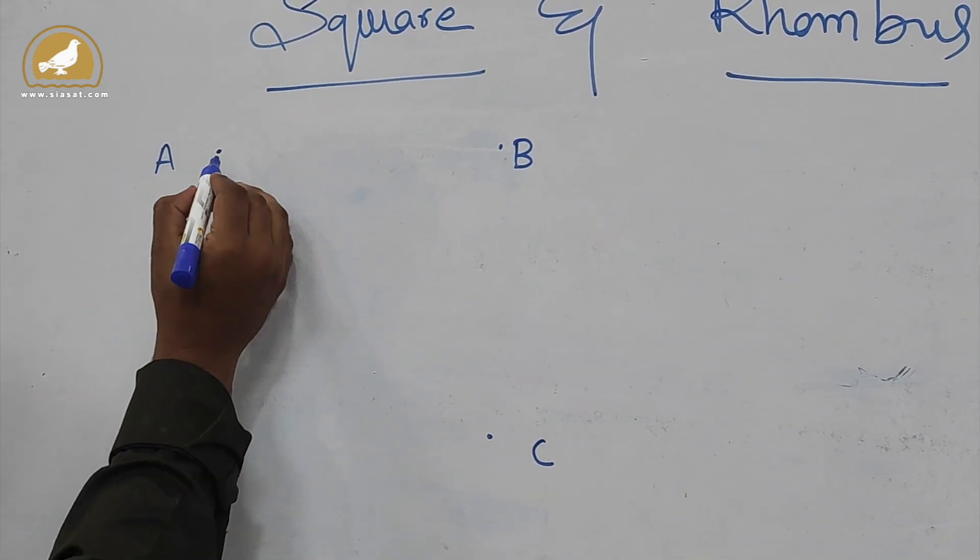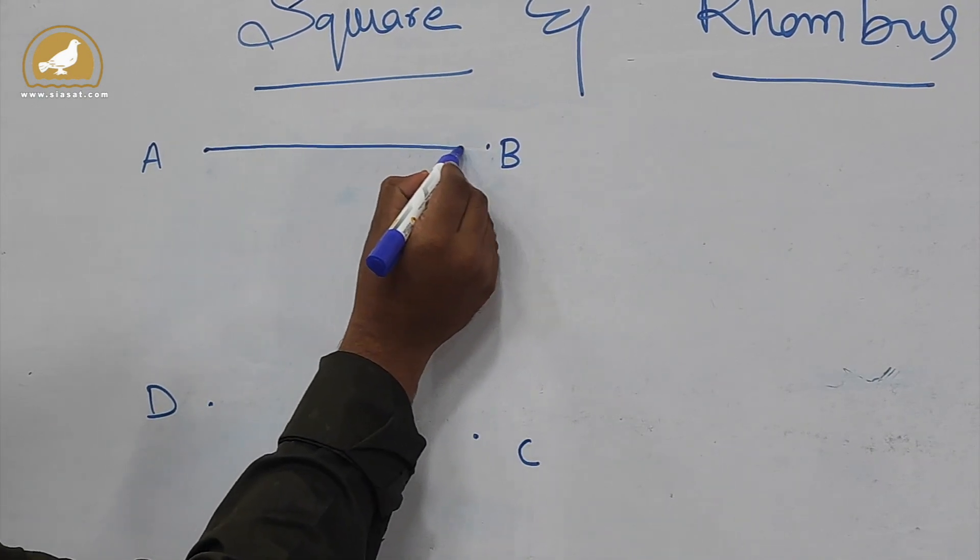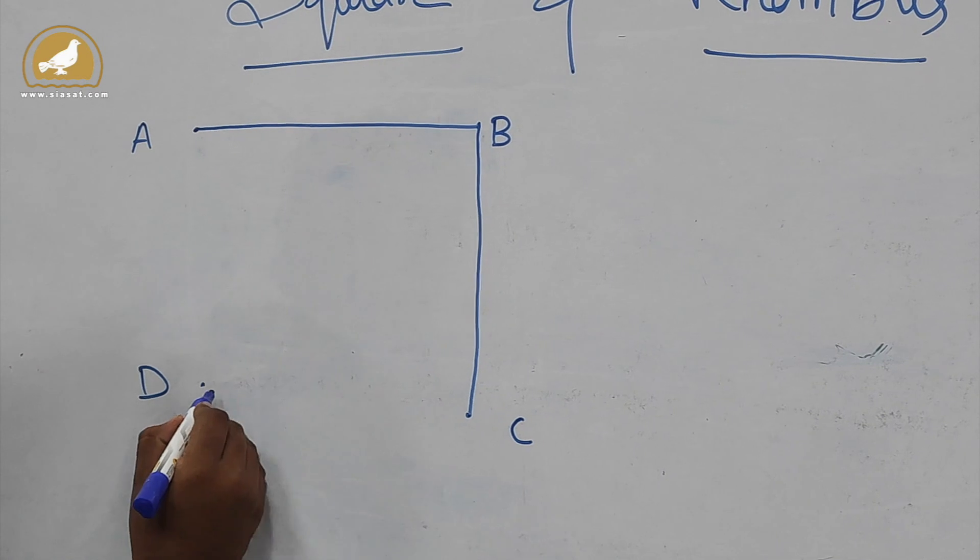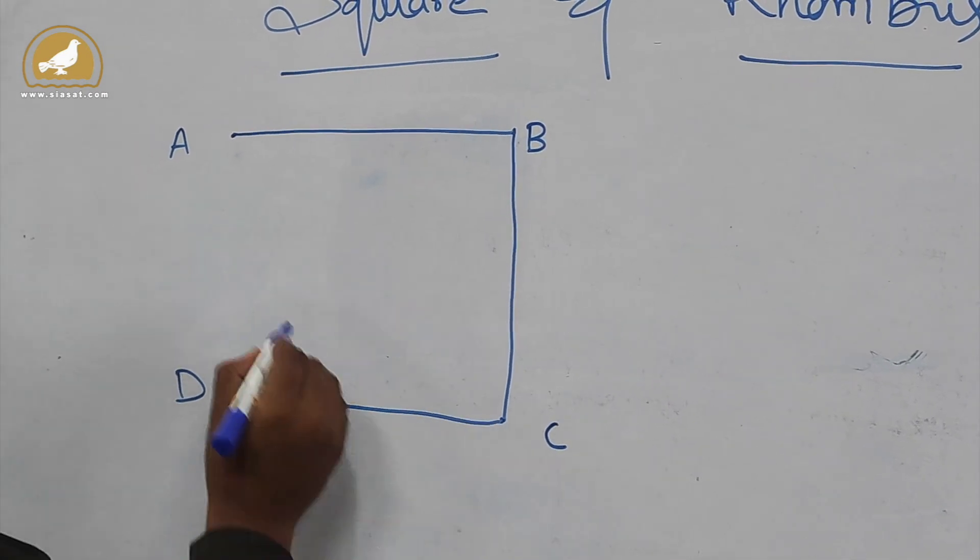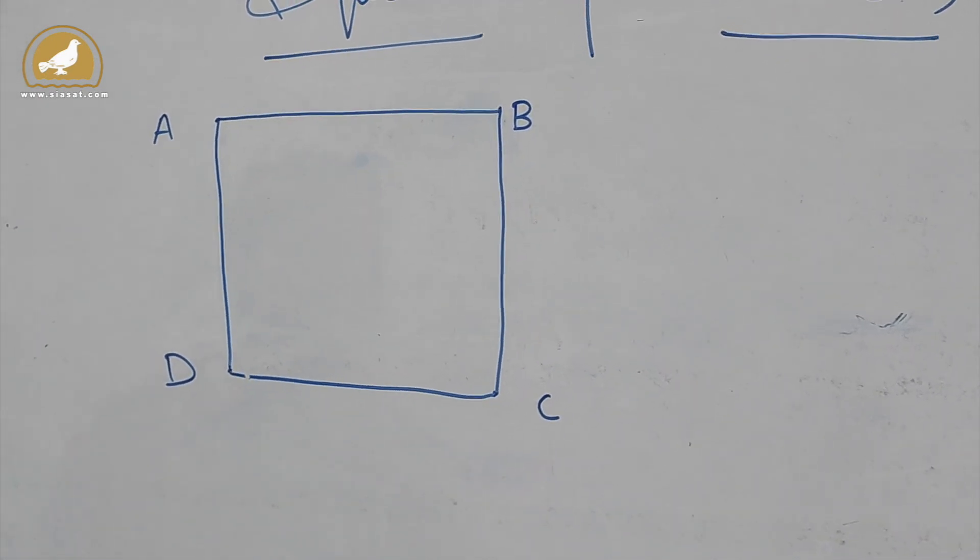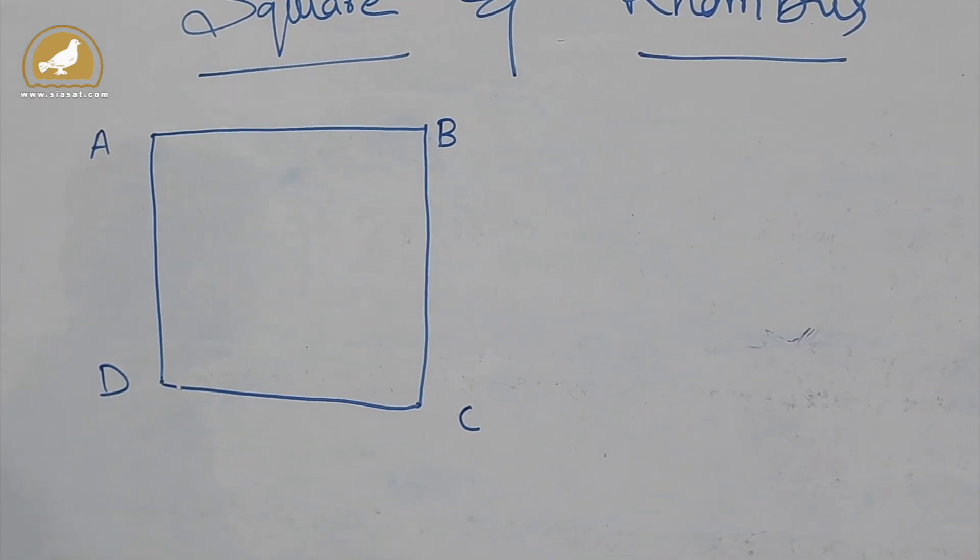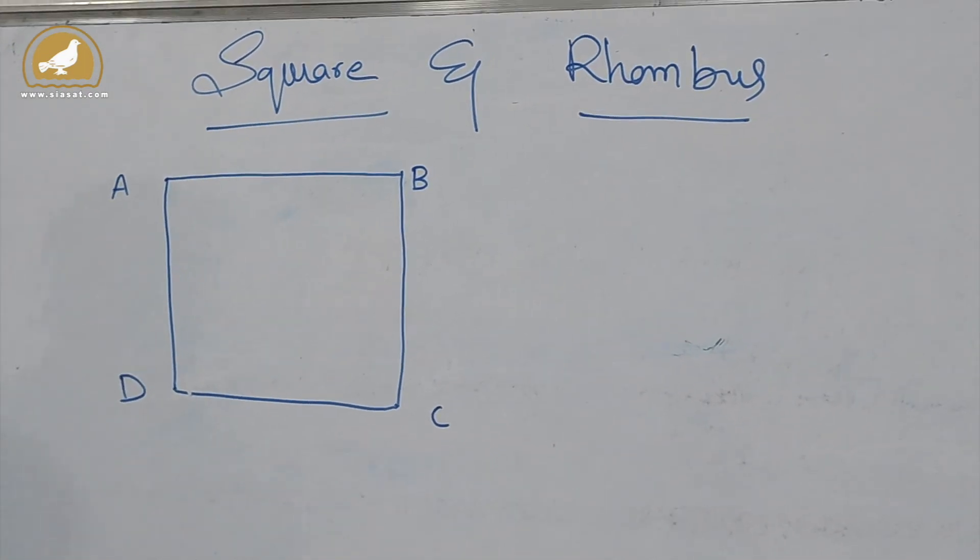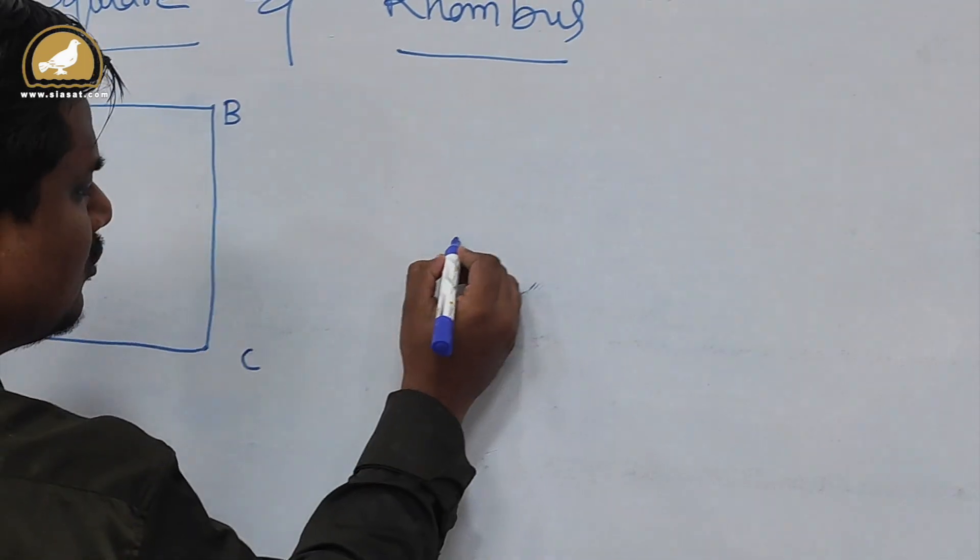A, B, C, and D. If I join these points A and B, B and C, C and D, and D and A, by seeing this structure you can say that it is a square. But in exams they will not draw this diagram.